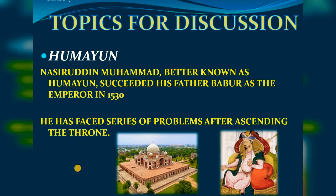Humayun was initially successful against both of them. However, Bahadur Shah soon recaptured Gujarat and Malwa. Although Humayun had won initially, Bahadur Shah returned to Gujarat and Malwa. Subsequently, Sher Shah defeated Humayun decisively in the Battles of Chausa and Kannauj. The meaning of 'decisively' is to resolve an issue — here it means a clear and definitive defeat.